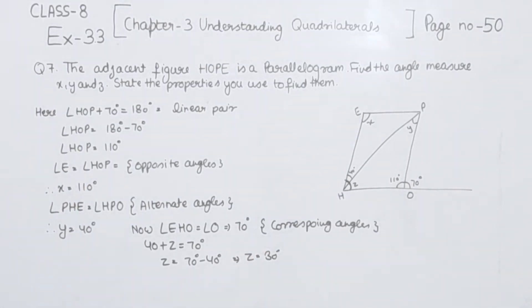So we have found the values of X, Y and Z. Three of them we are having. And we have written the properties which we have used in the solution. So with this we have completed question number 7. In the next video we are going to start with question number 8.